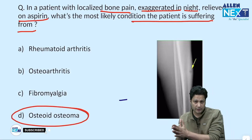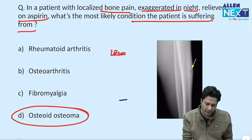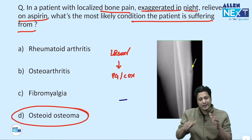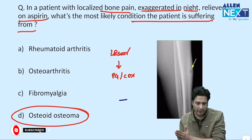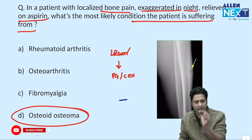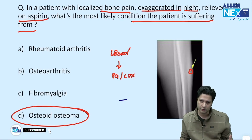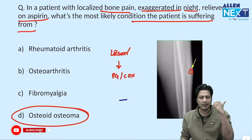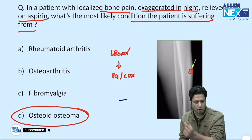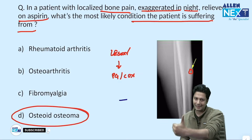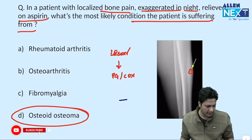Osteoid osteoma has relief of pain on taking aspirin because the lesion contains prostaglandins and cyclooxygenase. When you give a COX inhibitor, there is a dramatic relief in clinical features. Point two: the X-ray shows a radiolucent nidus within the long bone cortex, which is diagnostic for osteoid osteoma. Unlike other benign tumors where X-rays are only suggestive, in osteoid osteoma the diagnosis is certain because malignant conversion is extremely rare.